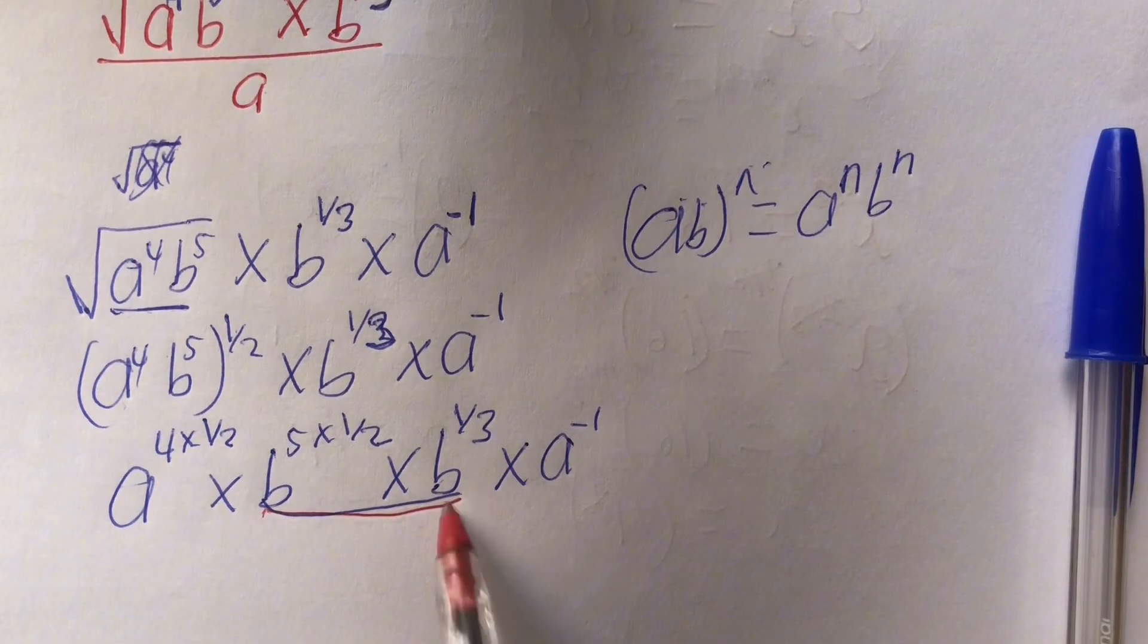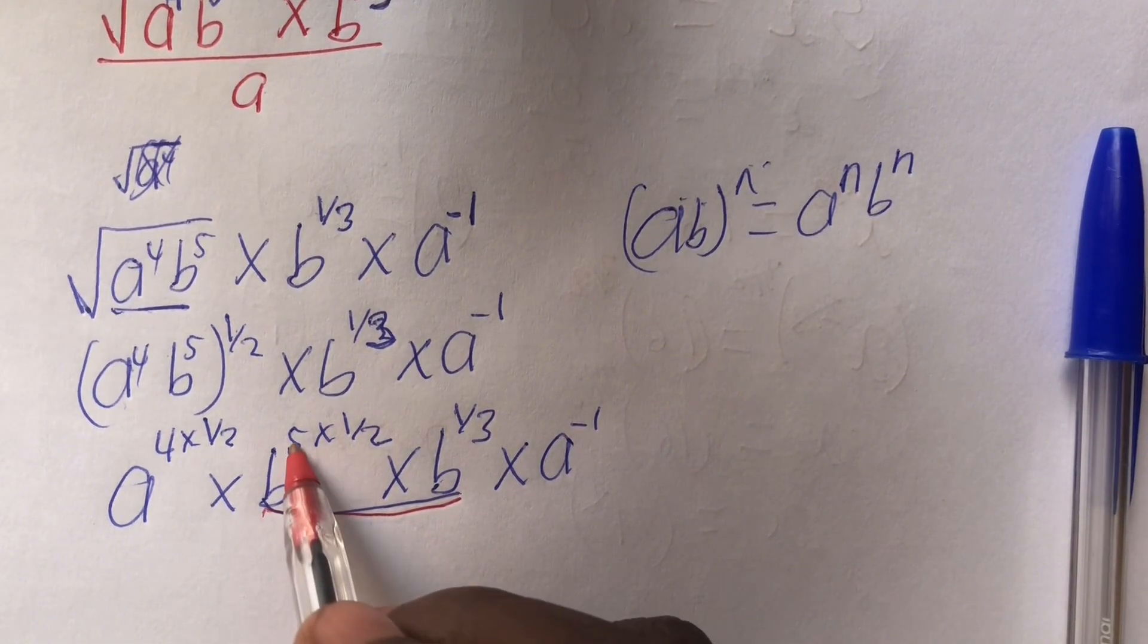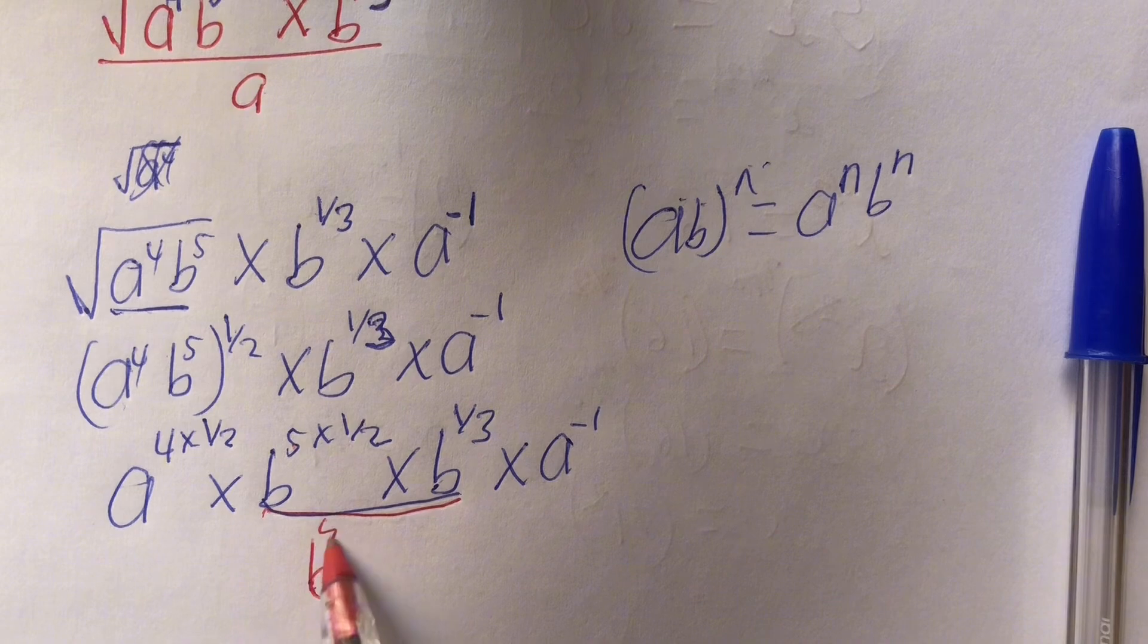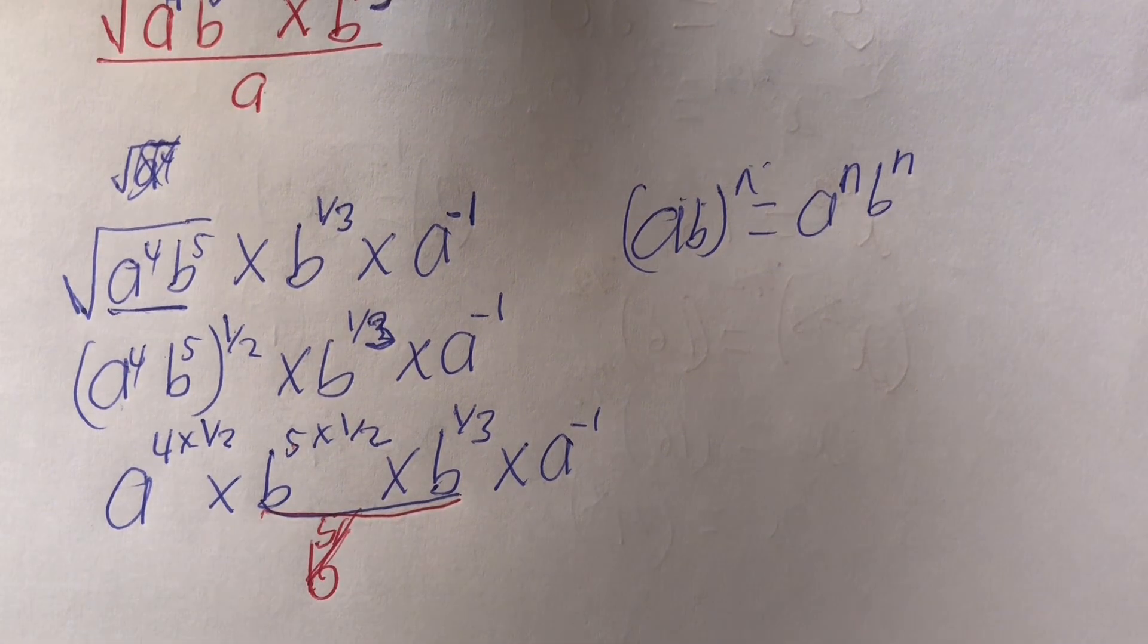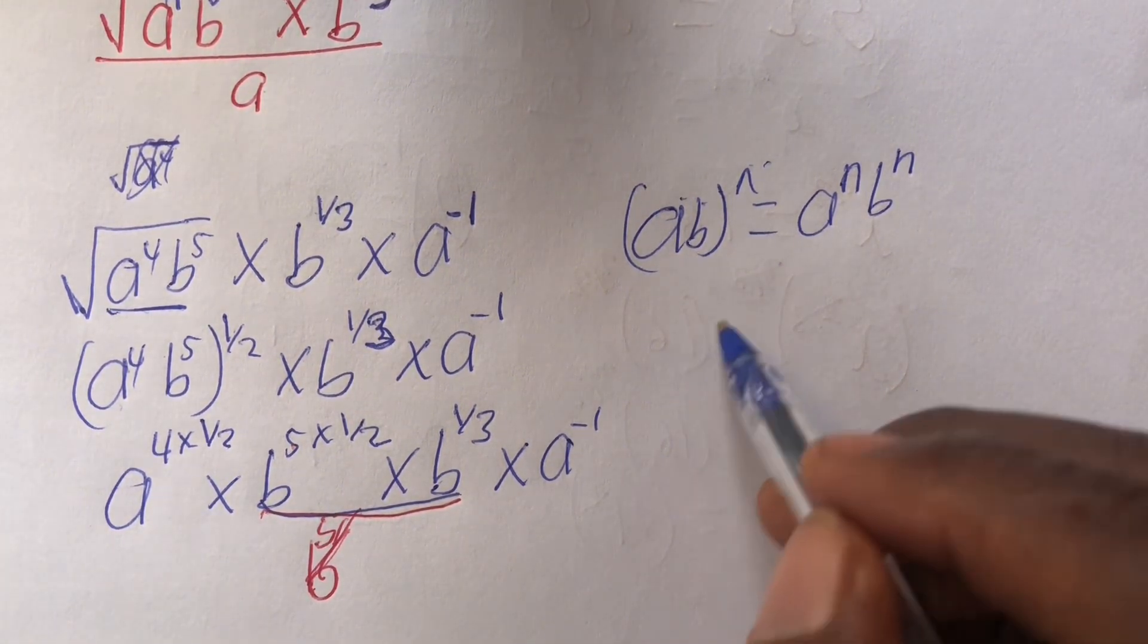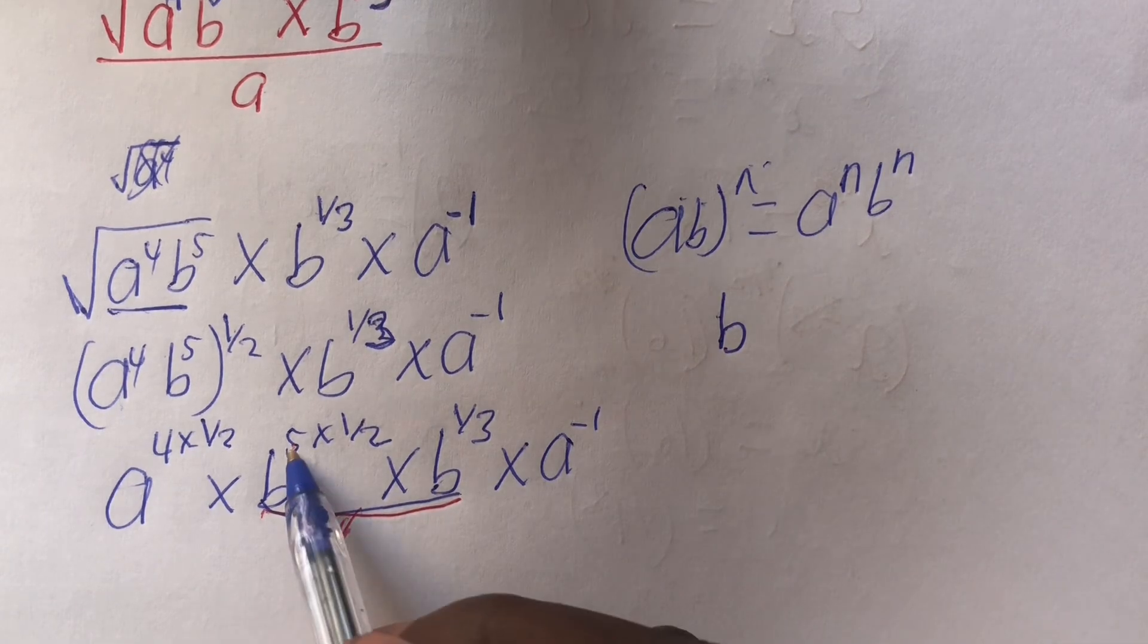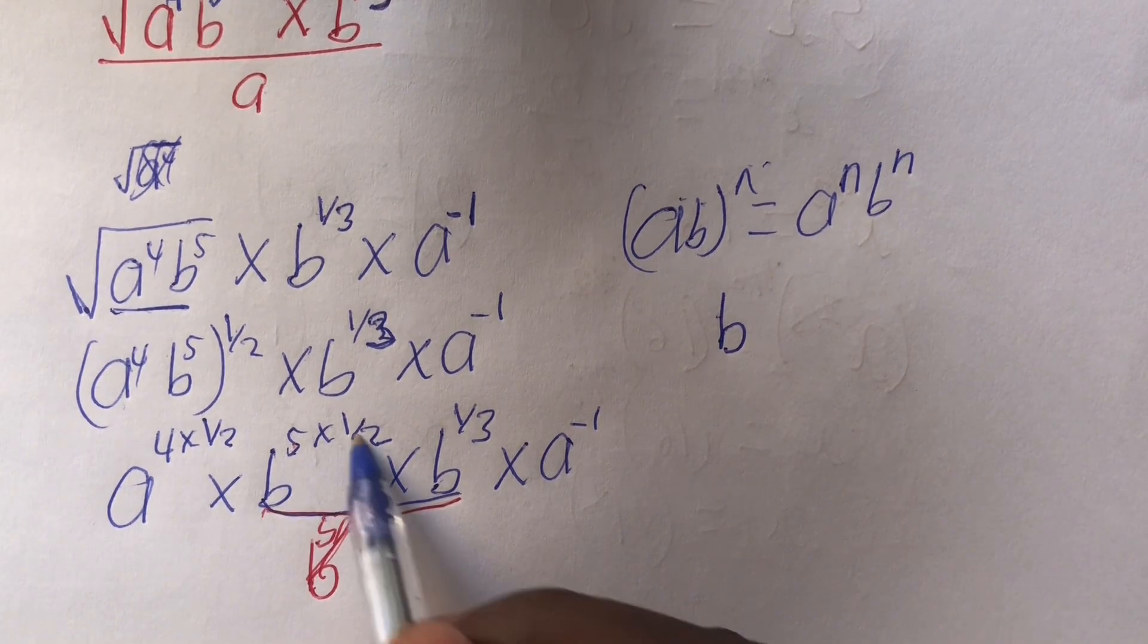We get b, 5 times half gives 5 out of 2. Let me do it here. We take b, 5 times half gives 5 out of 2, plus 1/3.